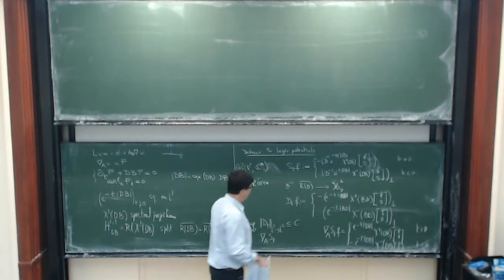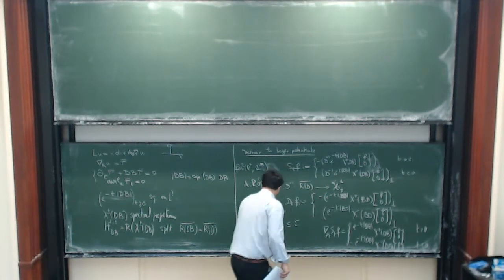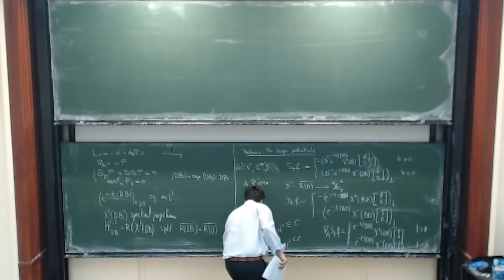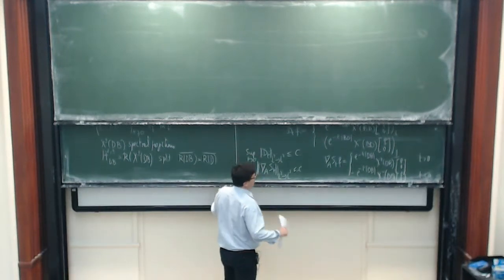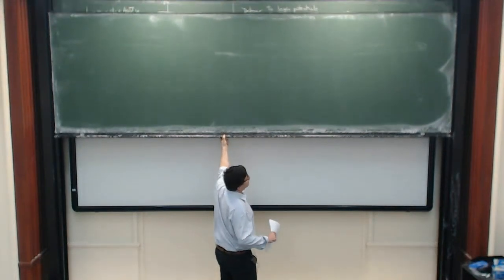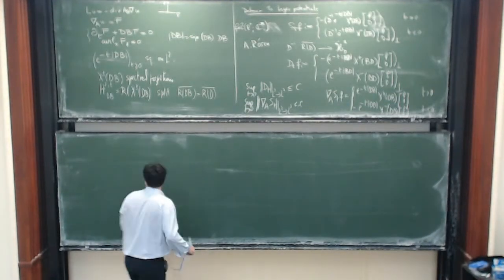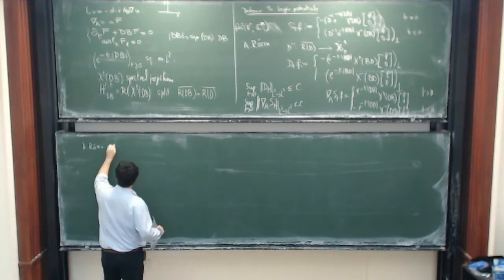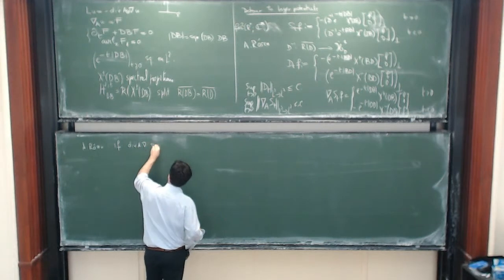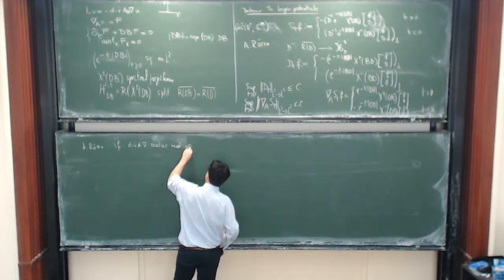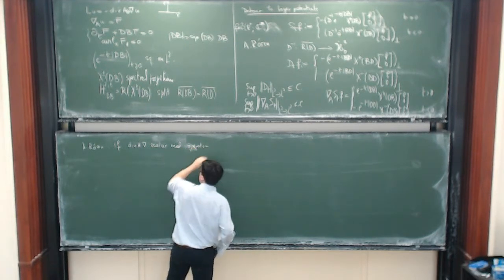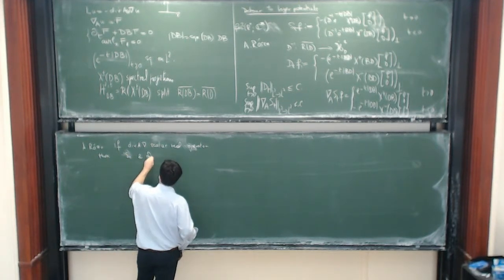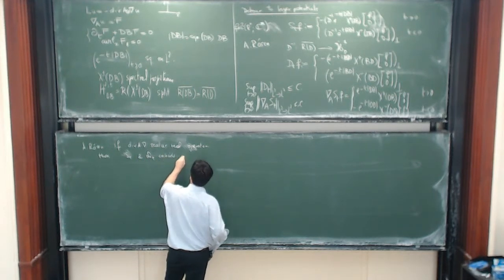A little bit of computation gives you that, and again, if you look at the boundedness of these operators on L2, this gives you that this is uniformly bounded in L2. So I'm not doing anything but defining operators from the functional calculus at the moment. What is interesting is that Andreas Rosen proved that if div A grad is a scalar real equation operator, then S_T and D_T coincide, well, maybe on smooth functions, with the usual layer potential integrals.